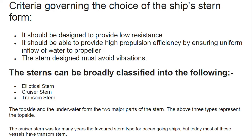Stern design has two major parts: the topside and the underwater part, which is the lower side. The three types — elliptical, cruiser, and transom — refer only to the top part. We are not discussing the lower stern design here. The three types are elliptical stern, cruiser stern, and transom stern.